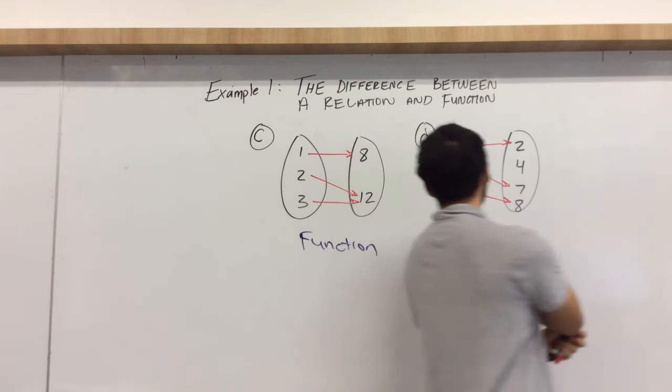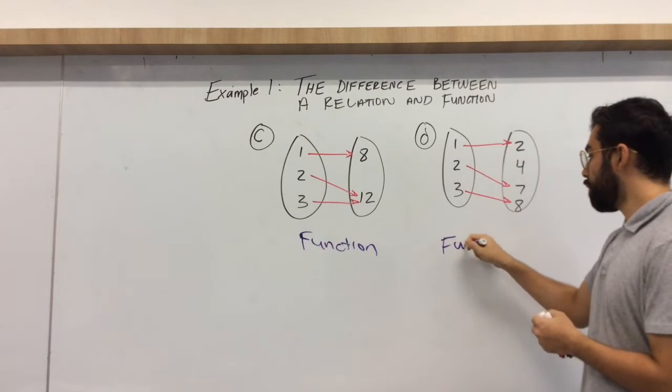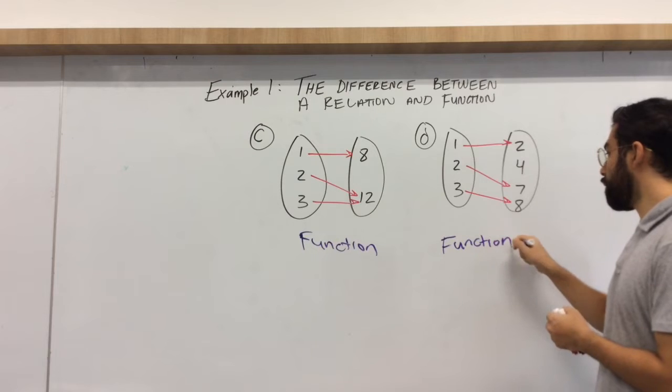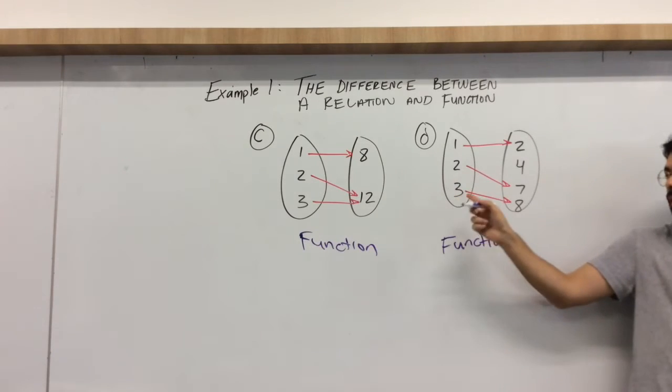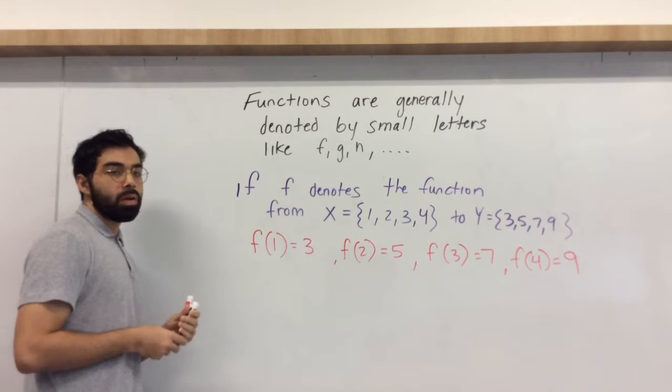Let's go to d. 1 goes to 2, 2 to 7, and 3 to 8. So this would also be a function. Each independent x value has a 1 y value.